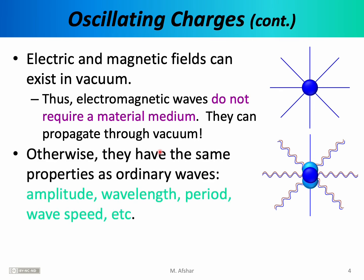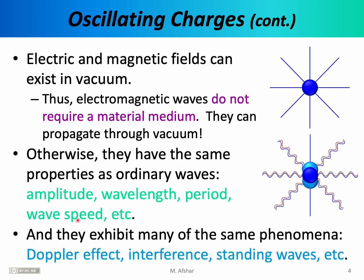Other than this distinction, electromagnetic waves share many of the same properties as ordinary waves. Like most ordinary waves, an electromagnetic wave has an amplitude, a wavelength, a period, and a wave speed. They also exhibit many of the same phenomena, such as the Doppler effect, interference, and standing waves. In future lectures, we'll discuss the interference of electromagnetic waves extensively.